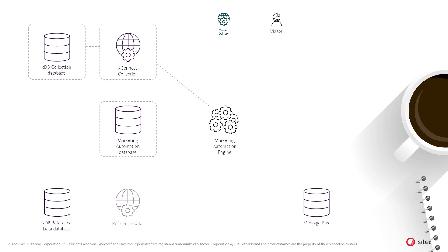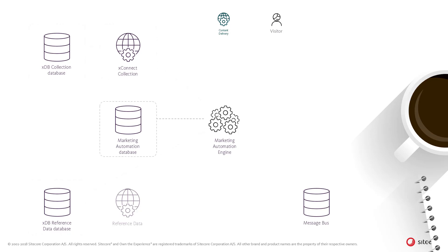In processing a work item, the Marketing Automation Engine loads the contact through the XConnect Collections Service. It then reads all active Marketing Automation Plans from the XDB Reference Database and processes each plan individually for the contact. If the contact meets the entry criteria of a plan, an enrollment is created in the Marketing Automation Database. Enrollments can contain custom data defined by custom activities in the plan or through a call to the enroll operation on the Marketing Automation Operations Service.